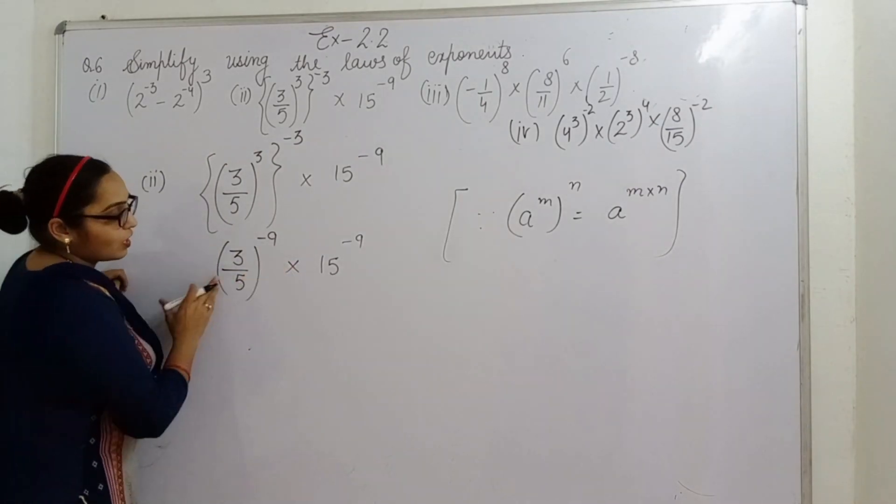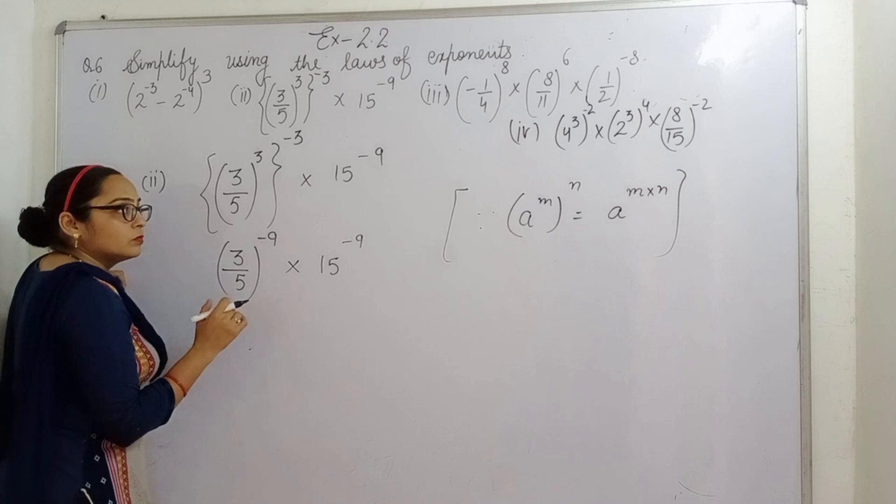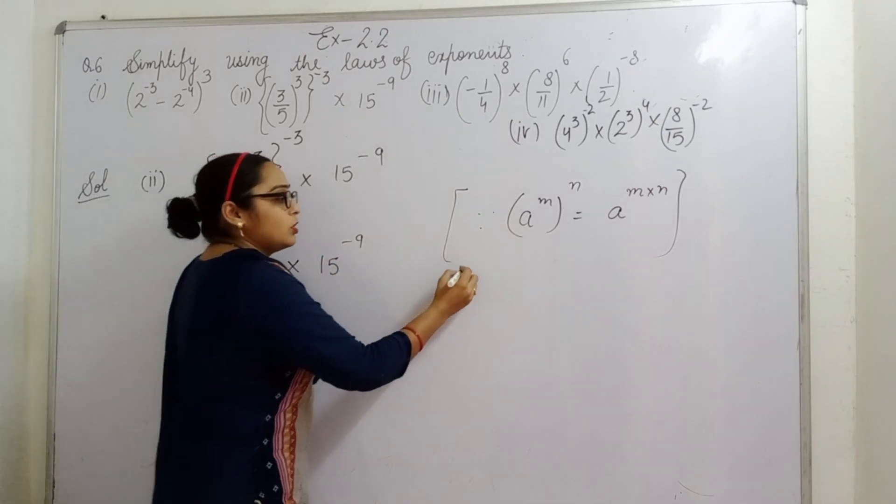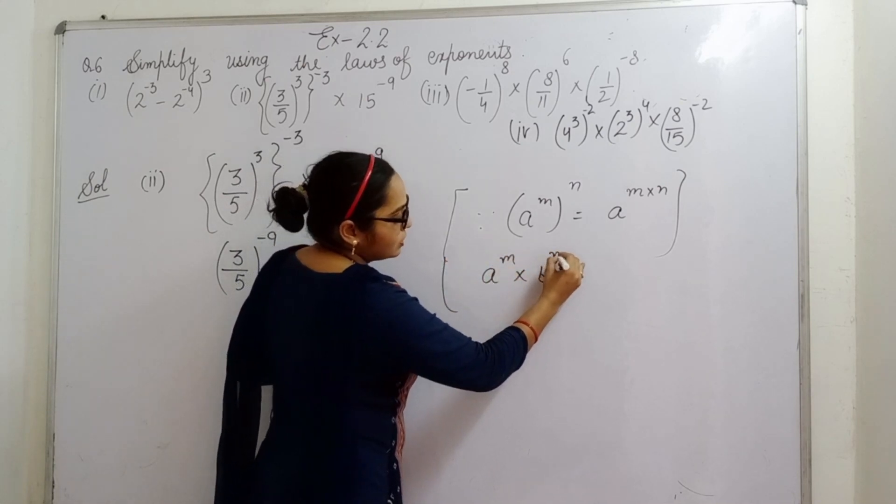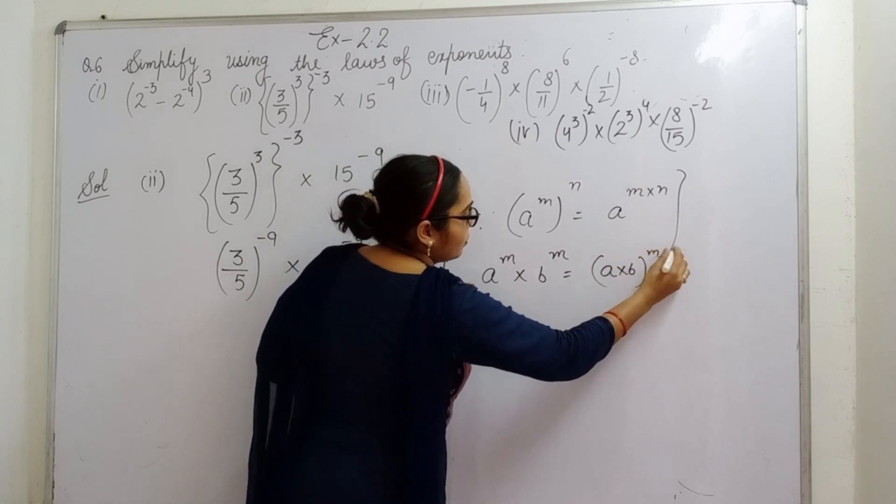Now again powers are same, again we can use the laws of exponent. And which law of exponent we will use here? This one: a raised to power m, b raised to power m equals a multiply b raised to power m.